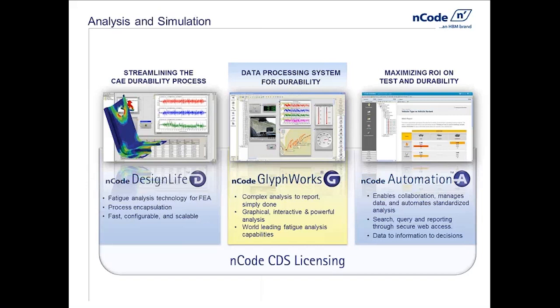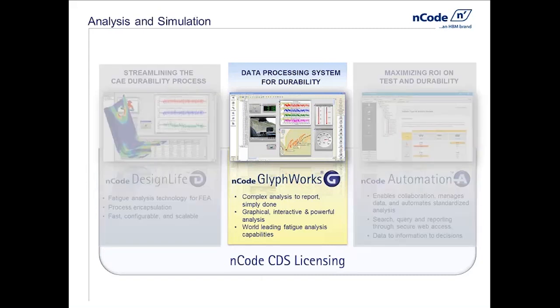Today we're looking at a continued ENCODE webinar series on the ENCODE software. There are three components to ENCODE software: Design Life, Glyphworks, and Automation. We're going to focus on Glyphworks today, because this is software for analyzing measured test data. We've had other webinars on strain gauge data or vibration analysis with accelerometers. Today we're going to be very specific and look at one particular niche topic — working with GPS data.